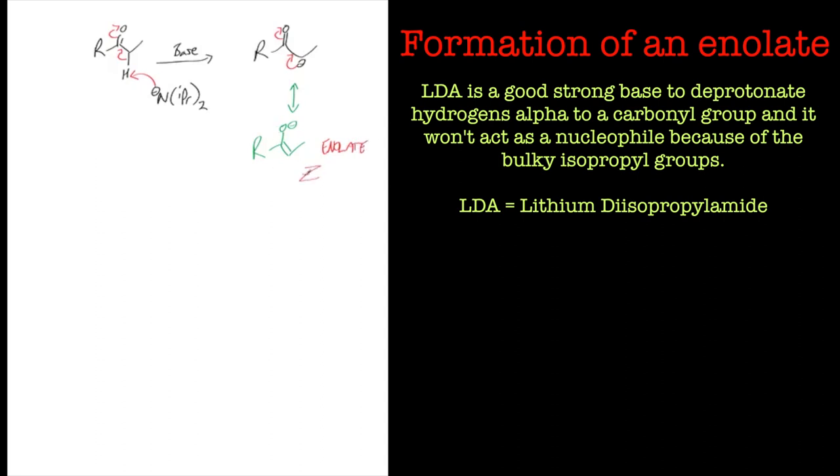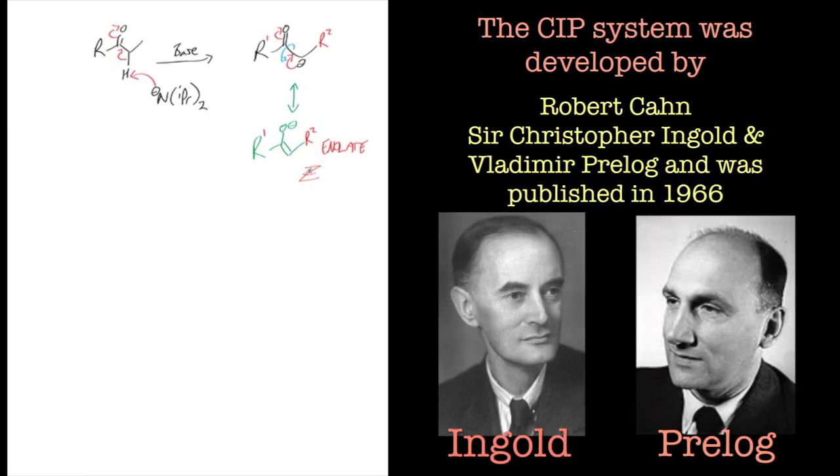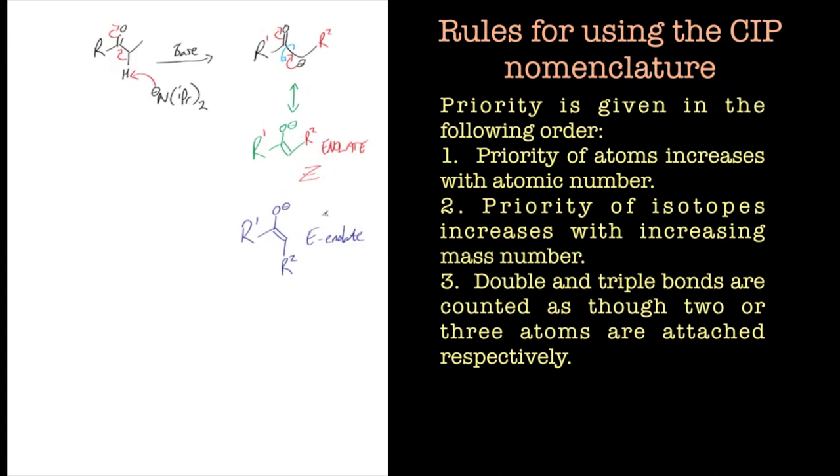So the first enolate as shown here is a Z enolate, and if you can't remember how to assign E and Z isomers then I urge you to have a look at the Cahn-Ingold-Prelog tutorial. And if we deprotonate in another sense we get the E enolate like this.